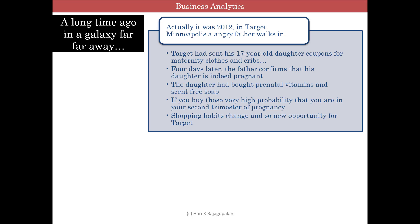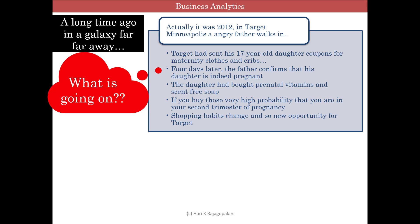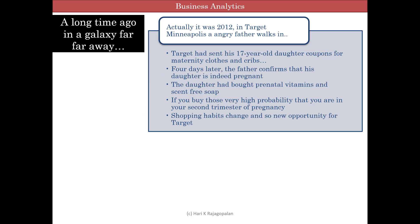Target, on analyzing the data from its shoppers, had noticed some useful patterns. Lots of people buy lotion, but Target noticed that women on the baby registry were buying larger quantities of unscented lotion around the beginning of their second trimester. Pregnant women also loaded up on supplements like Calcium, Magnesium, and Zinc in the first 20 weeks. When someone suddenly starts buying scent-free soap, extra big bags of cotton balls, hand sanitizers, and washcloths, it signals they could be close to their delivery date. With analytics, you can predict with 87 to 90 percent accuracy when someone is going to be pregnant.